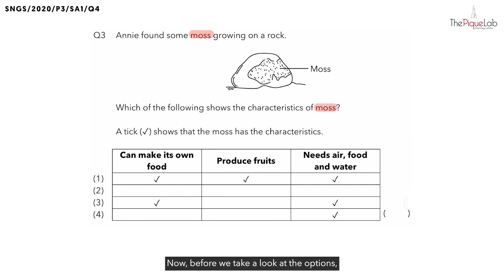Now, before we take a look at the options, let's try and identify what kind of living thing is a moss. We know that moss is a plant. But what kind of plant is it? Is it a flowering or a non-flowering plant? We know that moss is a non-flowering plant. So, let's write this out.